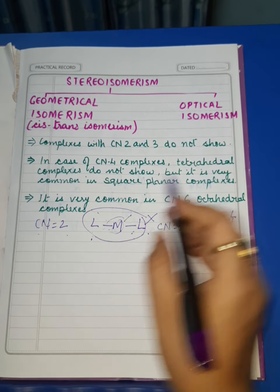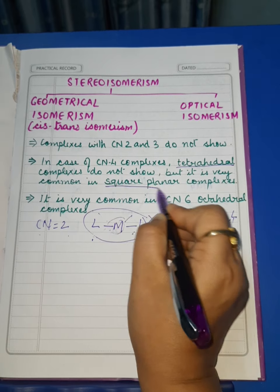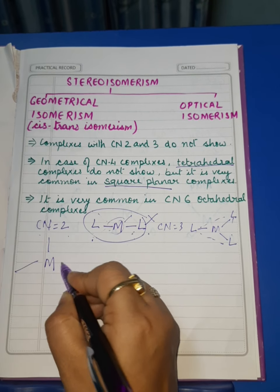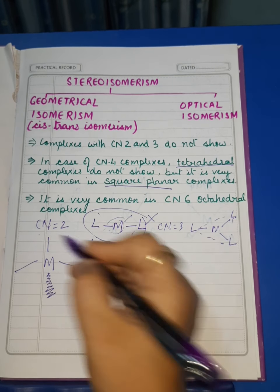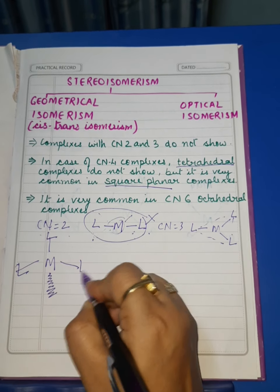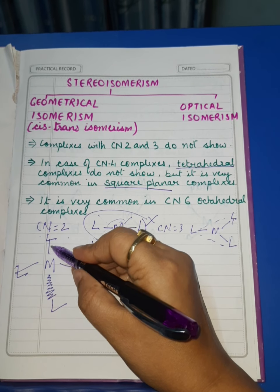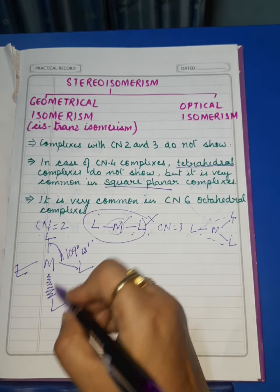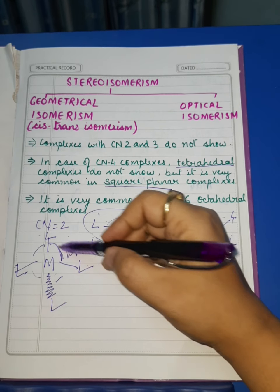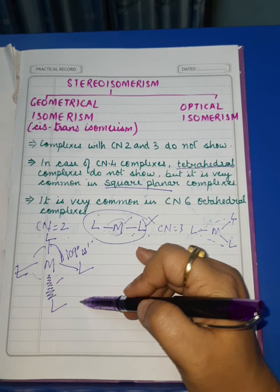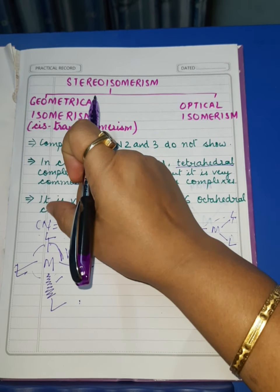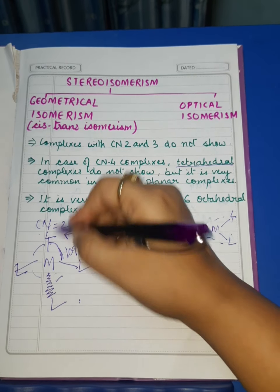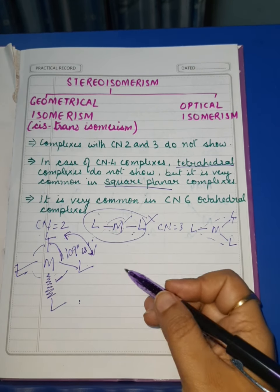In case of CN4 complexes, we can have two geometries: one is tetrahedral and the other is square planar. In tetrahedral geometry, the central metal atom is bonded with four ligands with a bond angle of 109°28' everywhere. If we try to get cis and trans forms in a tetrahedral complex and flip the positions of any two ligands, the situation remains the same because everywhere the bond angle is similar.